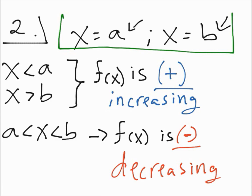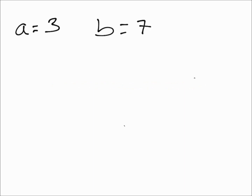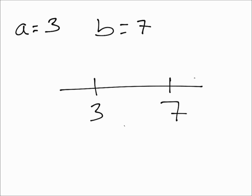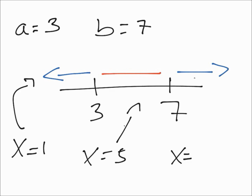It makes it simpler when you add numbers. So let's say A is 3 and B is 7. Anything below A, so below 3, is going to be increasing. Anything above B, or 7, is going to be increasing as well. Anything in between is going to be decreasing. So if you get x equals 1, you have an increasing function. If x equals 5, it will be decreasing. And if x equals 8 or above, it will be increasing.